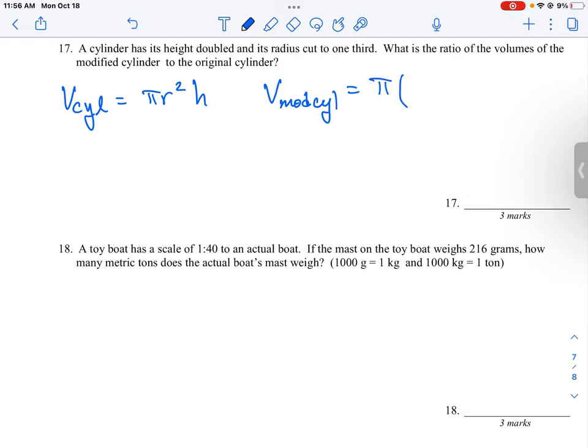So our formula looks a little bit strange, but it just means we're cutting the radius by a third, and we're going to square that, and we're going to double the height. So we're going to do 2h.